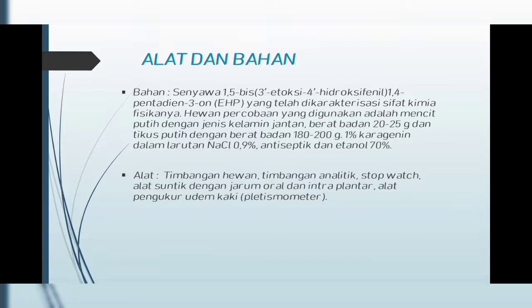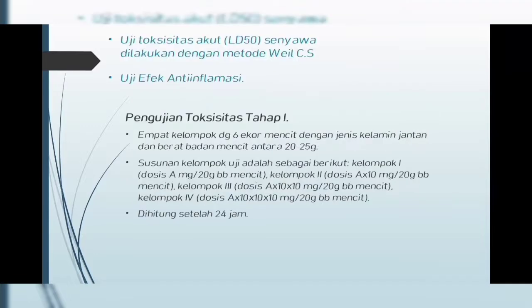Alat dan bahan: bahan yang digunakan yaitu senyawa EHP yang telah dikarakterisasi sifat kimia fisikanya. Hewan percobaan yang digunakan adalah mencit putih jantan berat badan 20–25 gram, dan tikus putih berat badan 180–200 gram. Bahan lainnya: karagenin 1% dalam larutan NaCl 0,9%, antiseptik, dan etanol 70%. Alat yang digunakan: timbangan hewan, timbangan analitik, stopwatch, alat suntik dengan jarum oral dan intraplanar, alat pengukur udem kaki atau pletismometer.